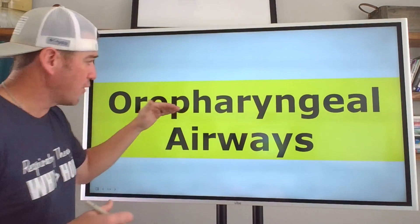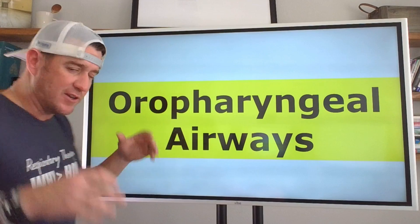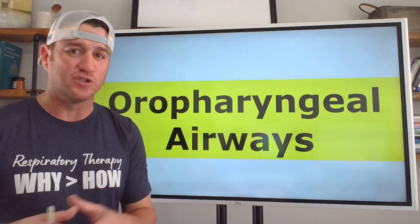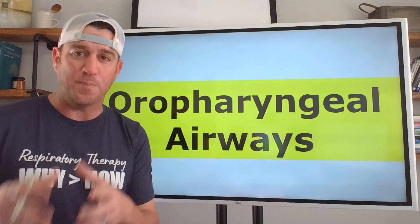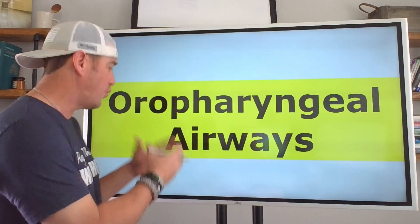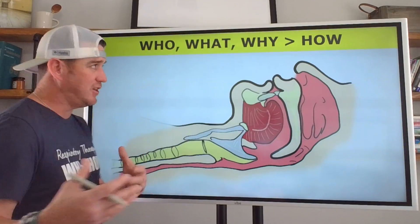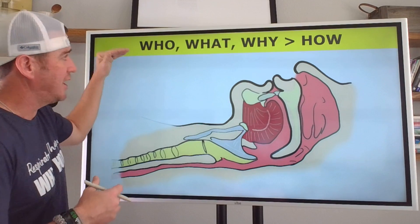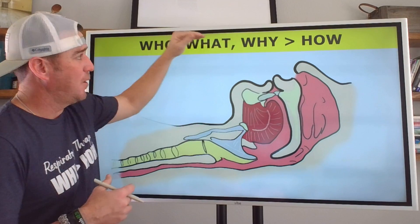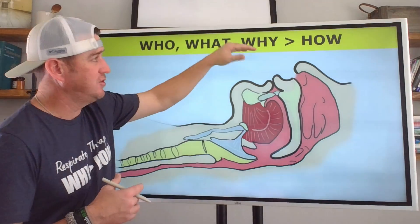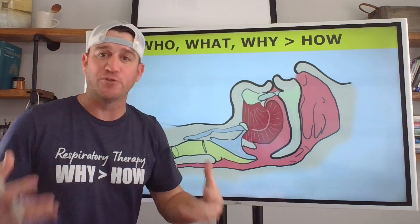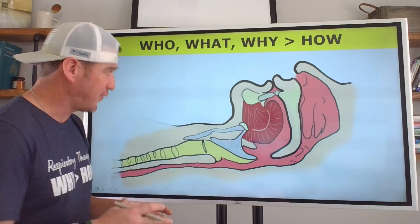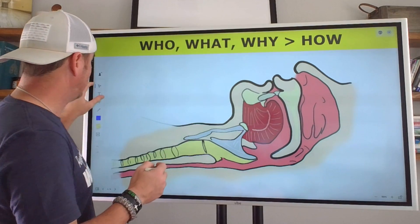We're talking all about oropharyngeal airways. You're oftentimes going to see these shortened to OPA. So if you ever see OPA, it's referring to an oropharyngeal airway. We're going to be talking about who do you use it on, what is it, why should you use it, and then finally how do we insert one? We're going to start with what is it.